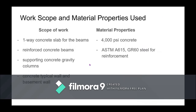Here's our work scope. It includes a one-way concrete slab, reinforced beams, supporting gravity columns, typical walls, and the basement wall. For all construction we use 4000 psi concrete and Grade 60 steel for the reinforcement, rebars, and ties.